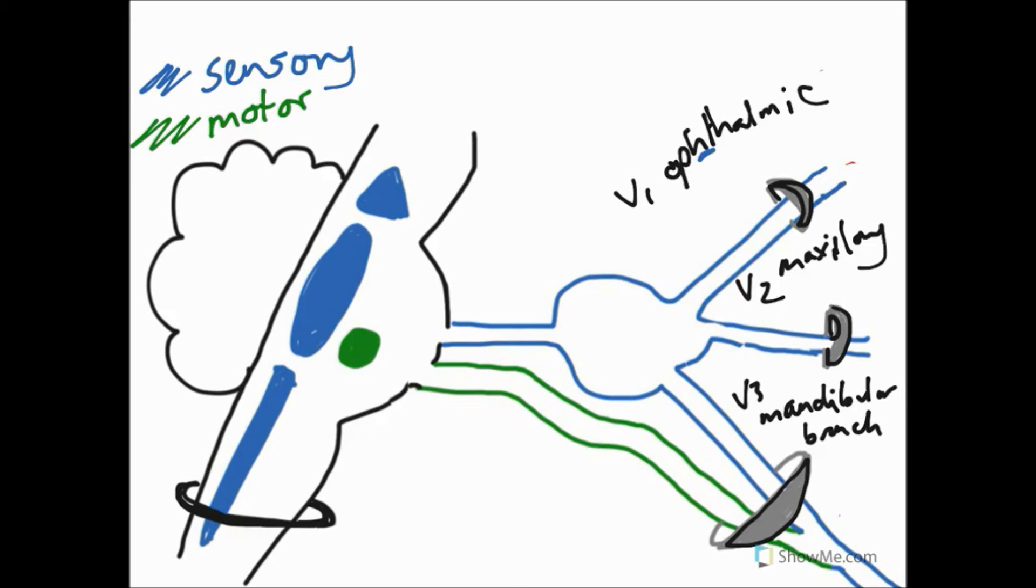Then as for our maxillary branch, which is V2, sensory again, is going to come from the periphery to the brainstem. And this is going to enter the skull through the foramen rotundum. And then lastly, we have our mandibular branch, which you can see here contains both motor information. So motor information is going to exit the skull through this foramen. And then you've got the blue sensory information, which is entering the skull through this foramen. And this is the foramen ovale.